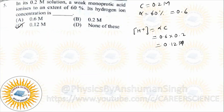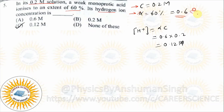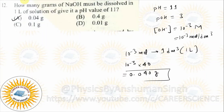In its 0.2 molar solution, a weak monoprotic acid is ionized to an extent of 60%. Find its hydrogen ion concentration. C is given and alpha is given (as percentage — convert to alpha). Then H+ ion = alpha × C. For a base it would be OH- = alpha × C.